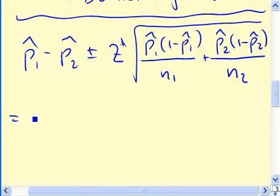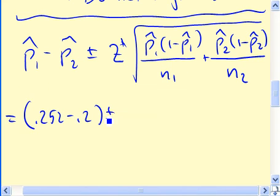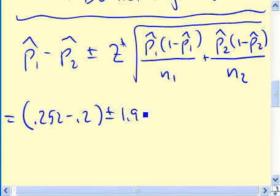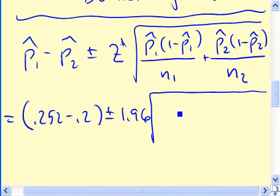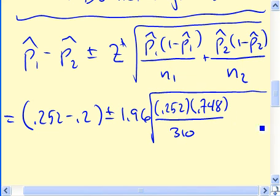Alright, so let's see. If we plug all this stuff in here, what do we get? So, we get, we have .252 minus .2, so that's just that part there, plus or minus. Now, z star for a 95% confidence interval is 1.96. You can verify that with Excel if you want, or just take my word for it. Alright, p1 hat is .252, 1 minus that, .748, divided by 310, and then plus .2 times .8 over 190.